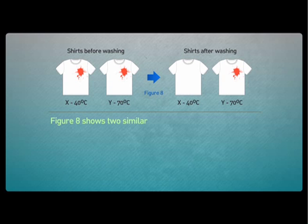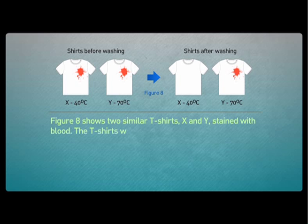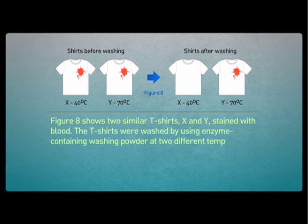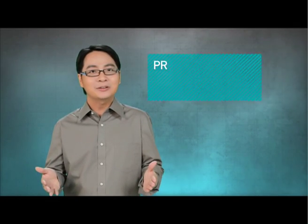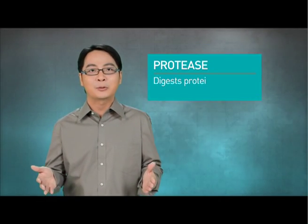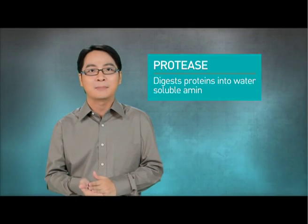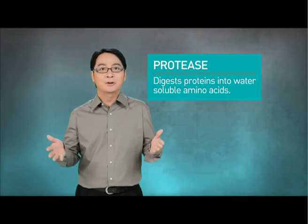Let's try some questions. Figure 8 shows two similar T-shirts, X and Y, stained with blood. The T-shirts were washed using enzyme-containing washing powder at two different temperatures. Explain the results of washing the shirts at 40 degrees Celsius and 70 degrees Celsius. 4 marks. Blood stains contain proteins. Protease in washing powder digests proteins into water-soluble amino acids. That's how clothes get clean.